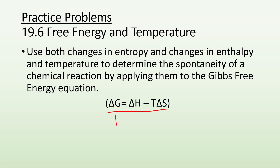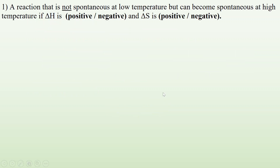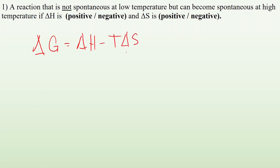The change in Gibbs free energy is equal to the change in enthalpy minus temperature times the change in entropy. For number one, a reaction is not spontaneous at low temperatures but can become spontaneous at high temperatures if delta H is blank and delta S is blank. We know delta G equals delta H minus T times delta S, and if delta G is positive it is non-spontaneous, if negative it is spontaneous.